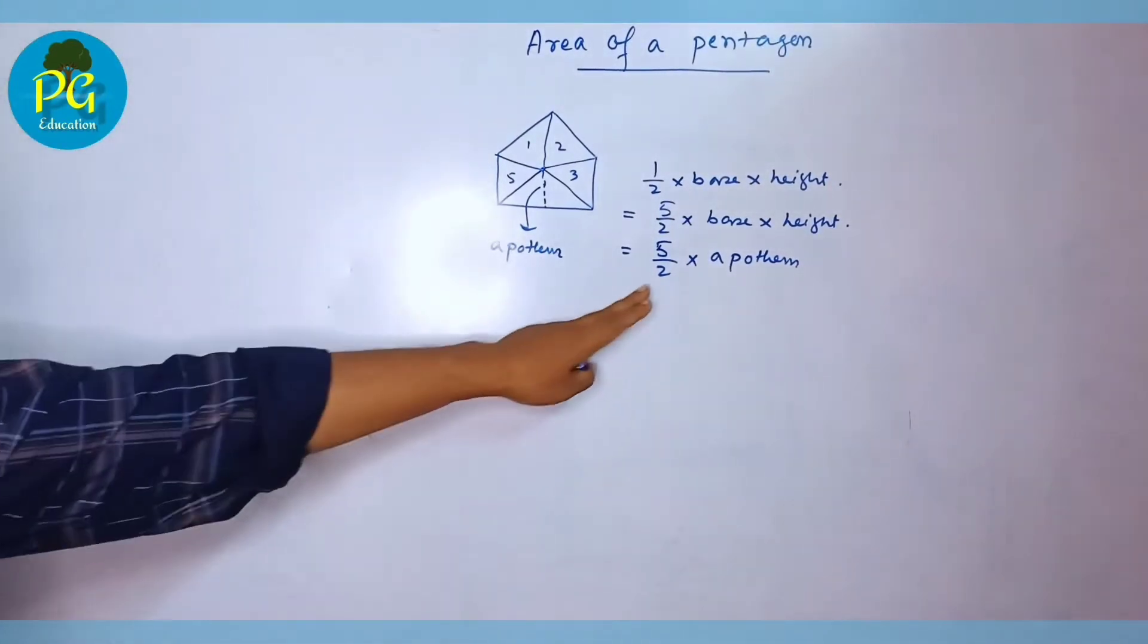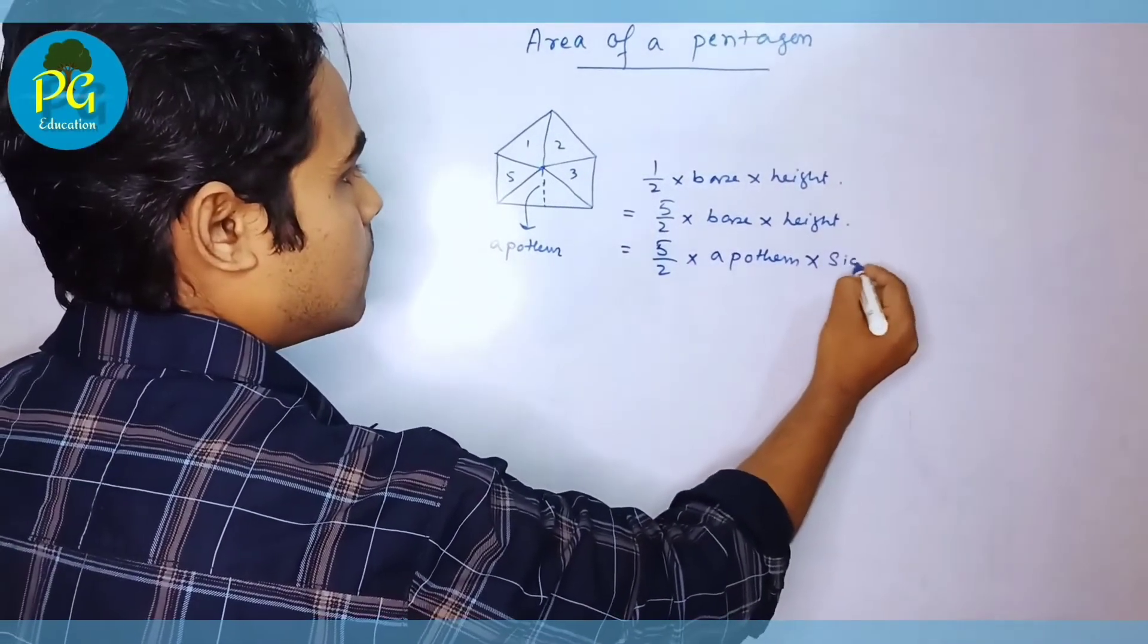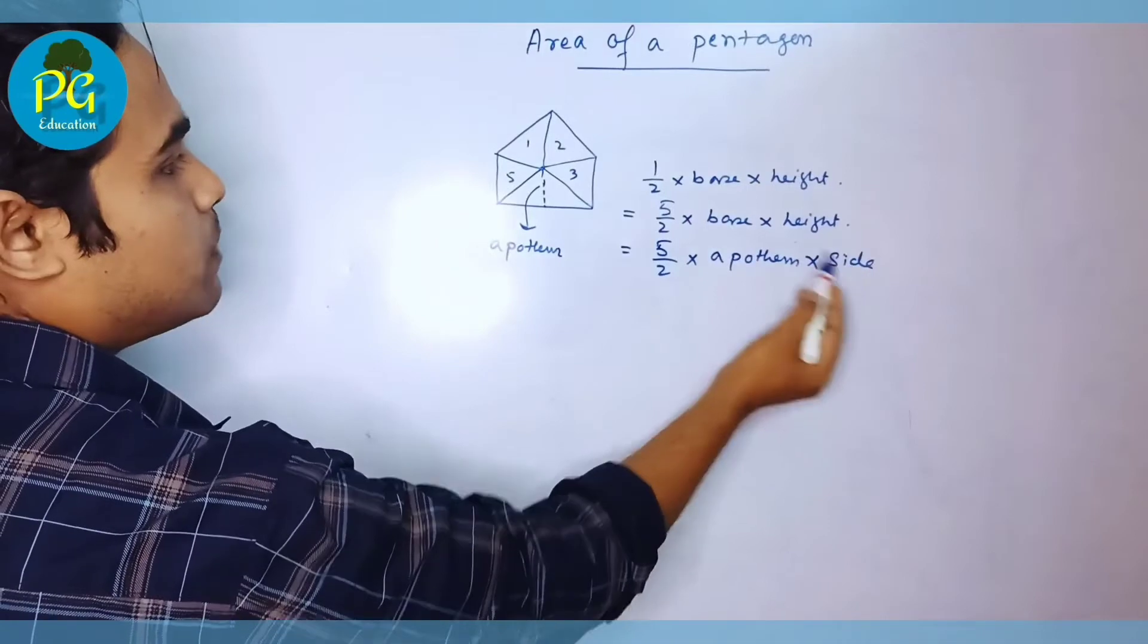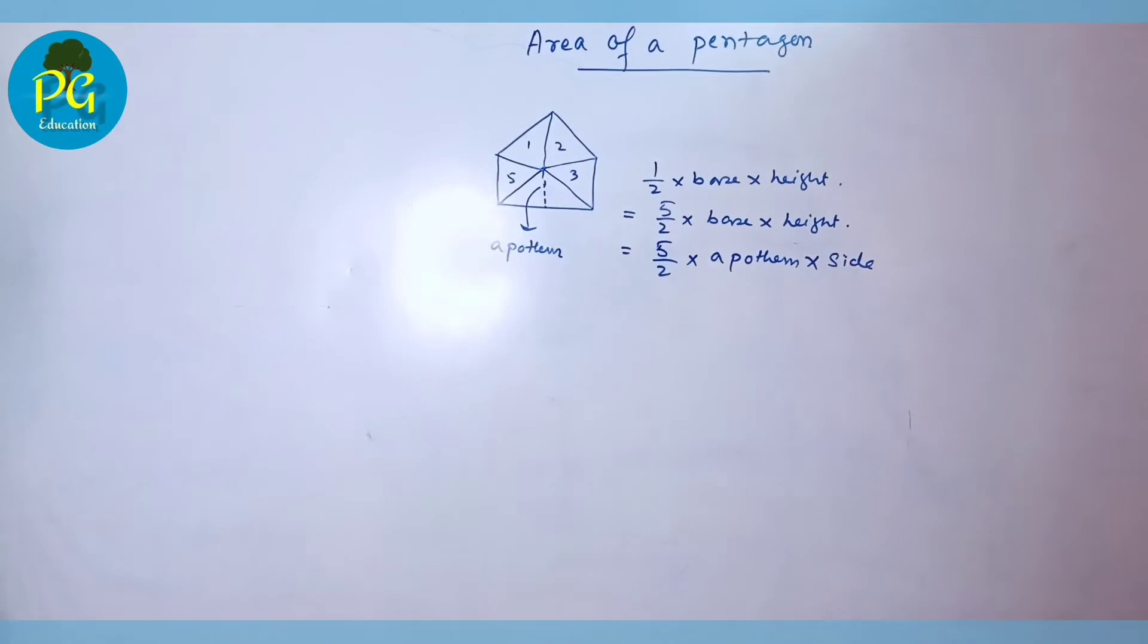Understood. So five by two into apothem into side. Side means base. Okay. So this is the formula of area of a pentagon.